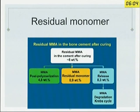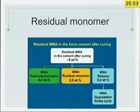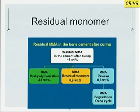Residual monomer is what is supposed to produce the so-called cement implantation syndrome — the sudden drop in blood pressure when you are implanting or pressurizing cement. Recent literature suggests the syndrome may not be related to the monomer itself but may be related to the release of fat during the pressurization process. In any case, this residual monomer can be found in the circulation for a few days and is believed to be metabolized by the Krebs cycle.